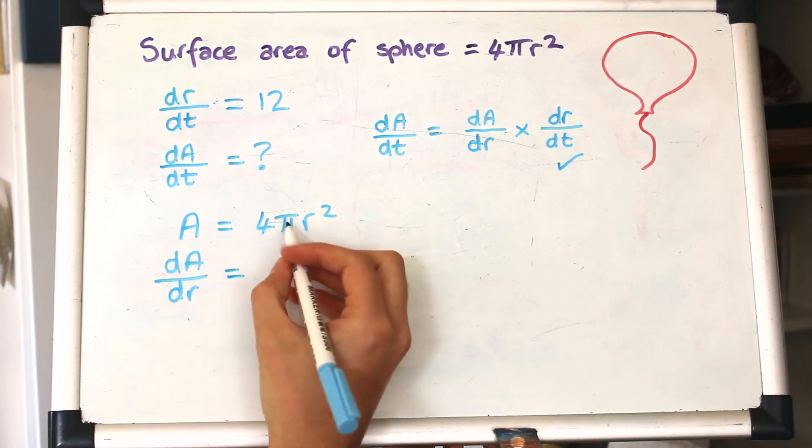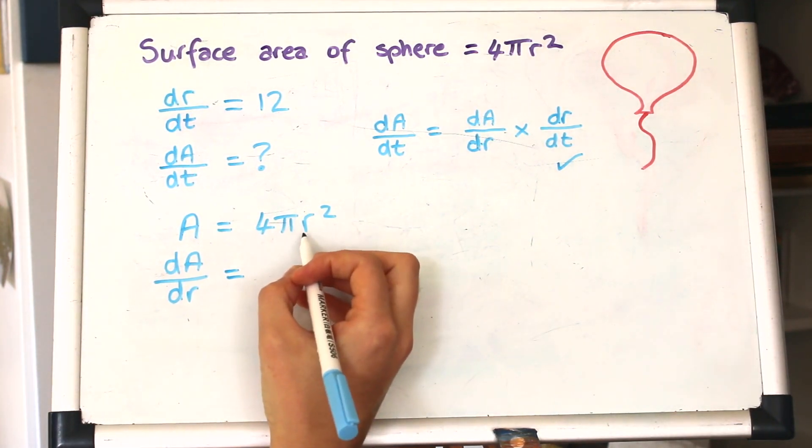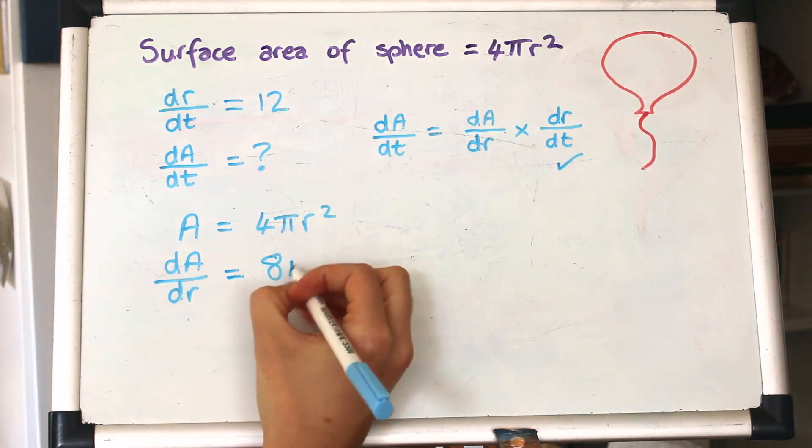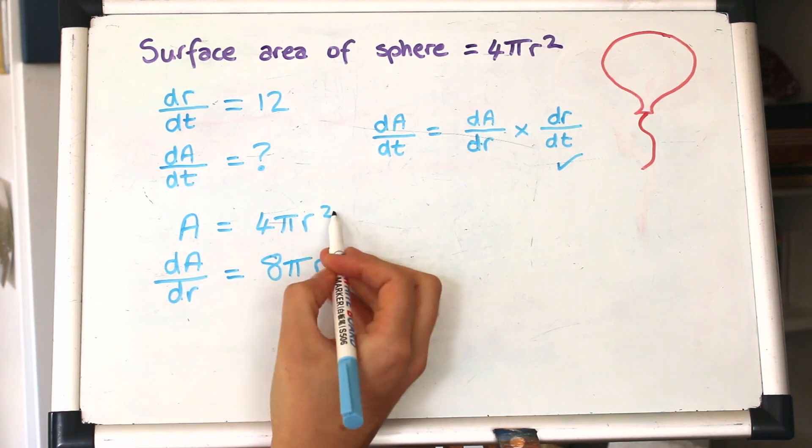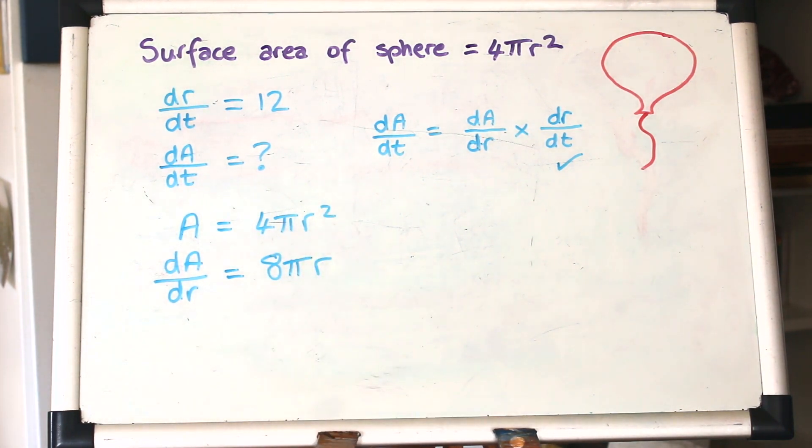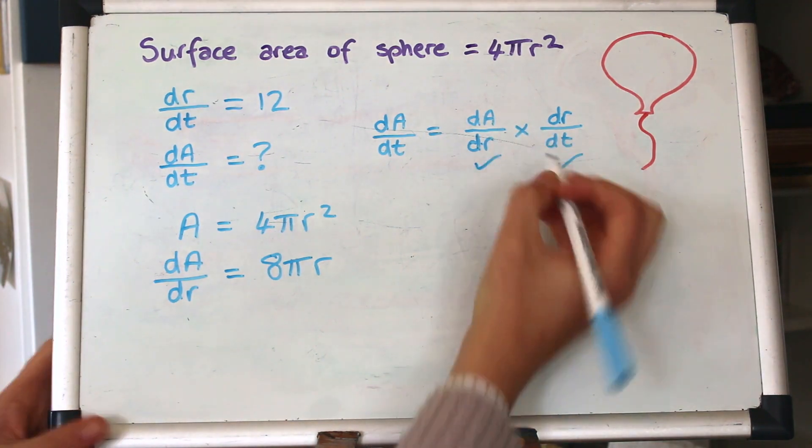So differentiating that, pi is a number, it's a constant, so we're just differentiating, we'll leave that like it's a number, and it's just the r. The 2 comes down to the front, and that power goes down by 1. So now we've got both of those, we can put them back into that equation.